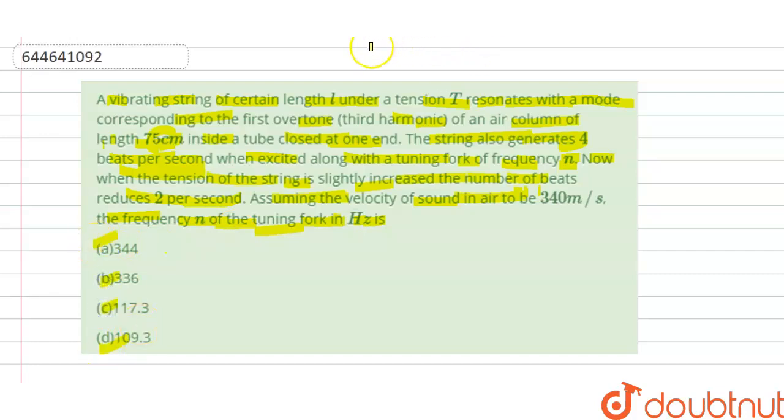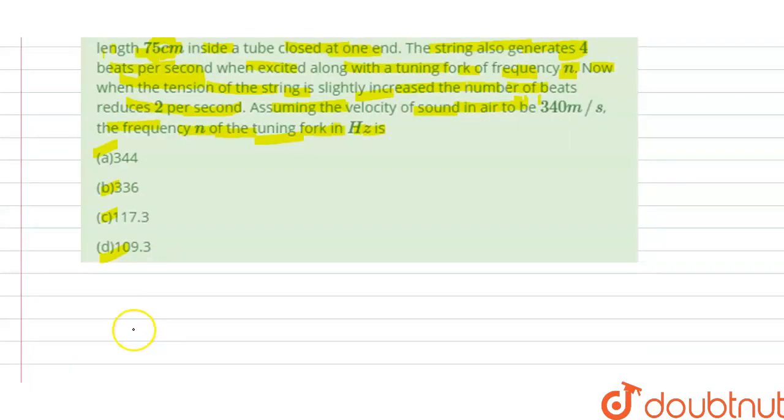Options A, B, C, D are given, so which option is correct? We have to find which option is correct. The solution of this question: let f be the frequency of the string.